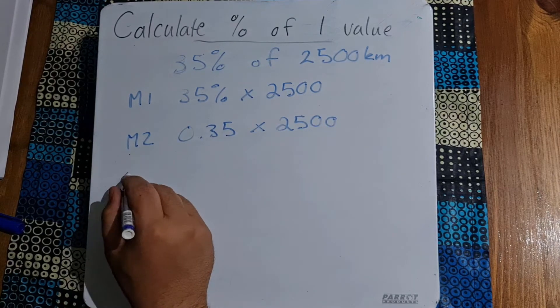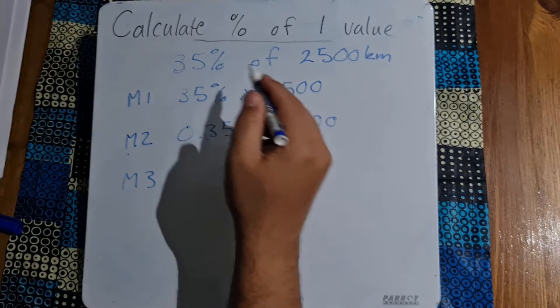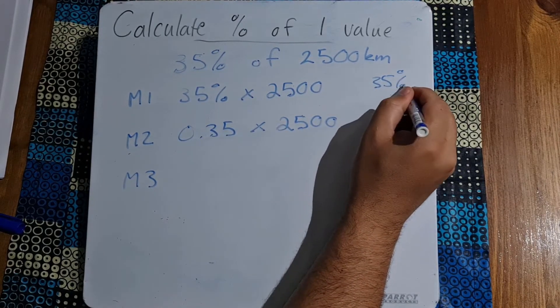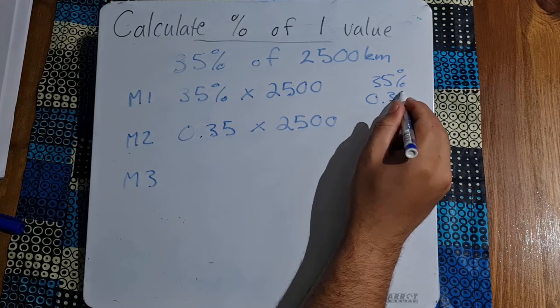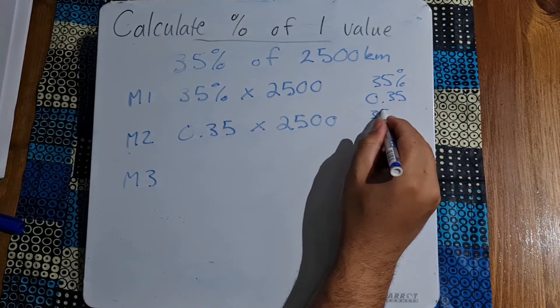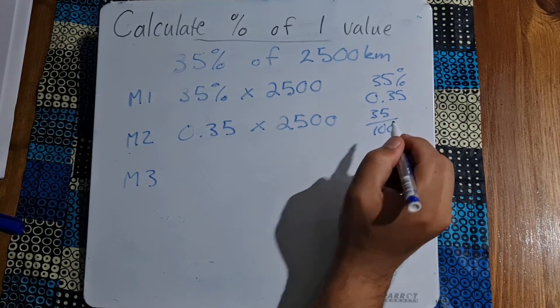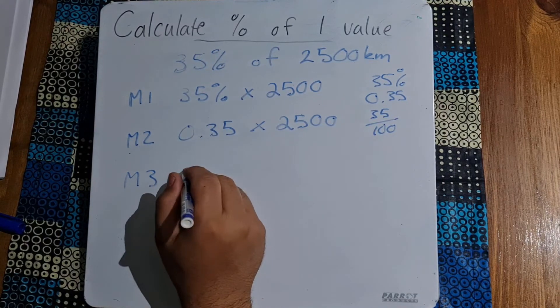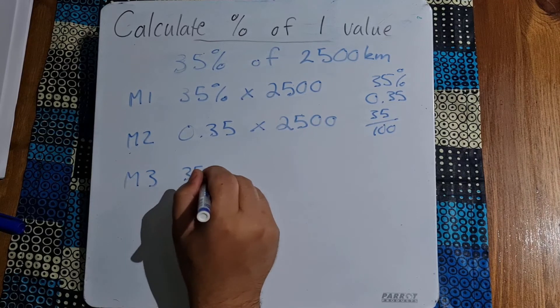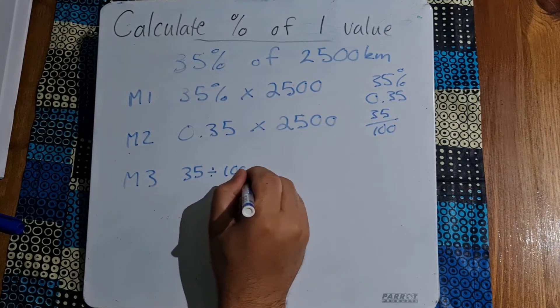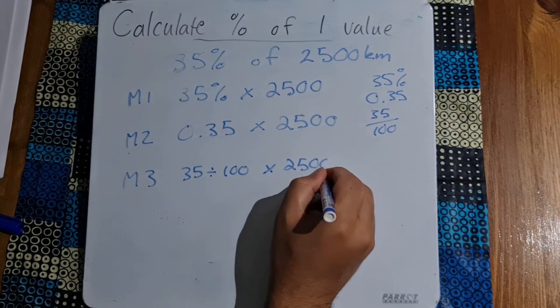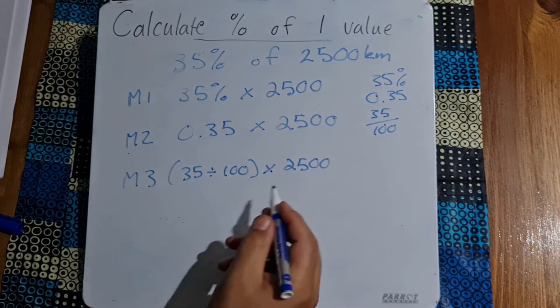Alternatively we're going to go to the third way. Now remember 35 percent can be expressed as 35 percent, 0.35, and 35 out of 100. Do you see the first one there? Then our second one. So logically our third one is going to be 35 divided by 100 multiplied by 2,500 and we can basically put that in brackets.